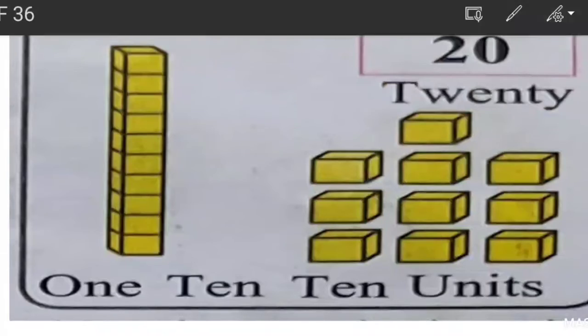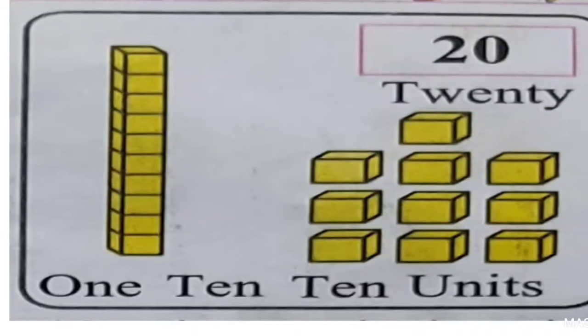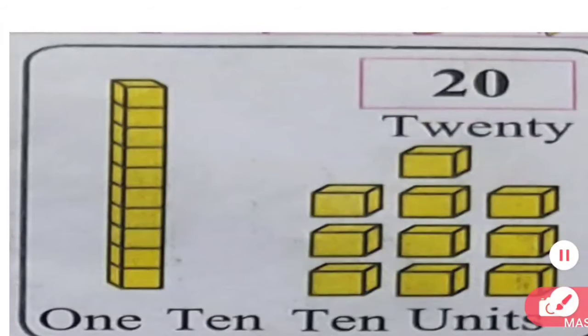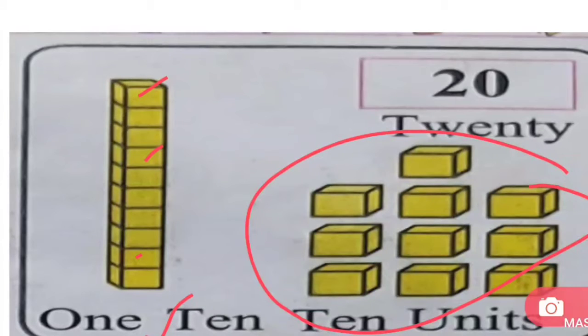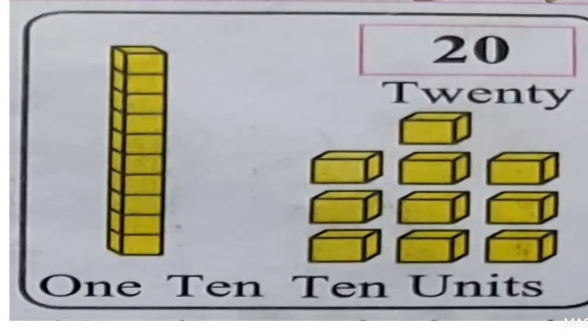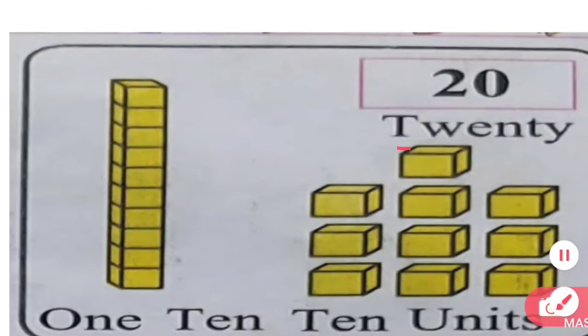Look here. Here 1 ten, how many cubes are there? 10 cubes. This is 1 ten, and these are 10 units. 1 ten, 10 units equals 20. T-W-E-N-T-Y, 20. 2, 0, 20. So dear students, how to write 20? We will make 2 and then 0: 20. 2 tens, 0 units equals 20.